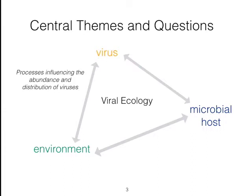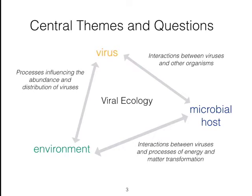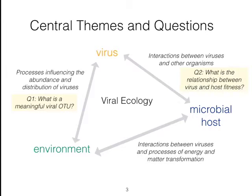We seek to understand the processes influencing the abundance and distribution of viruses in any environment, look at interactions between viruses and other organisms, and link those interactions to ecosystem environmental impacts. The central guiding questions I ask are: what is a meaningful viral OTU? What is the relationship between viral fitness and host fitness? And how do changes in virus fitness influence ecosystem function?